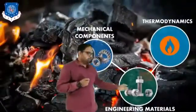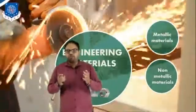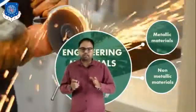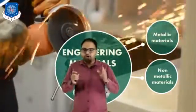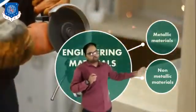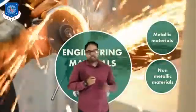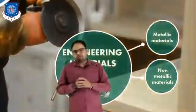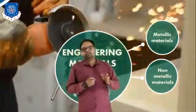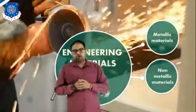Next one is engineering materials. We already know that for the formation of anything, material is required, and proper selection of the material is the main thing in engineering for its particular application. Engineering material is mainly divided into two groups: metallic materials and non-metallic materials. Metallic materials are further divided into two parts: ferrous material and non-ferrous material.